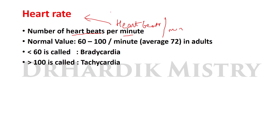What is the difference between pulse rate and heart rate? When we put a stethoscope over the heart, that is heart rate. When we measure pulses at the radial artery, that is pulse rate — the transmission of pressure waves through the arteries during the contraction phase of the heart chambers. The normal value of heart rate is 60 to 100, with an average of 72 beats per minute in adults.